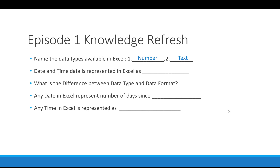As we know, both date and time are stored in Excel as numbers. The third question is: what is the difference between data type and data format?